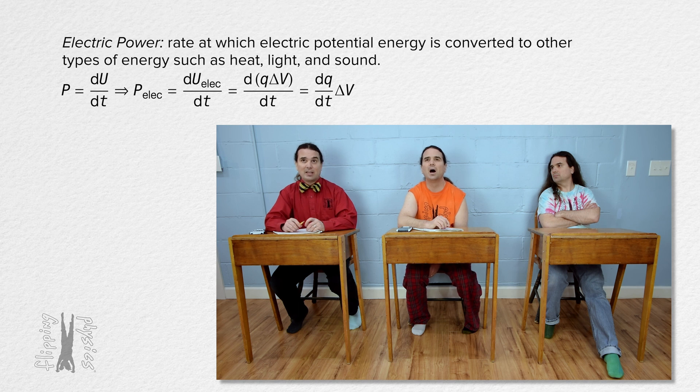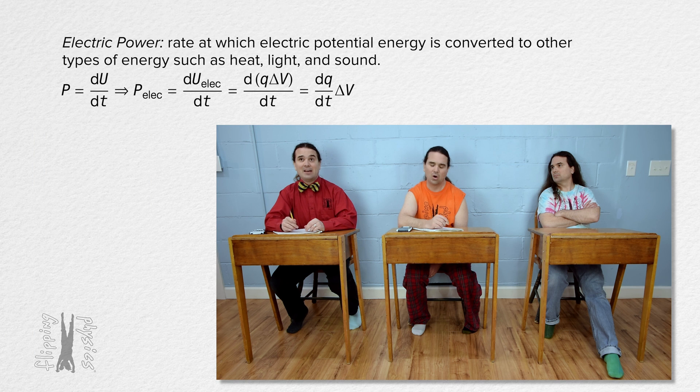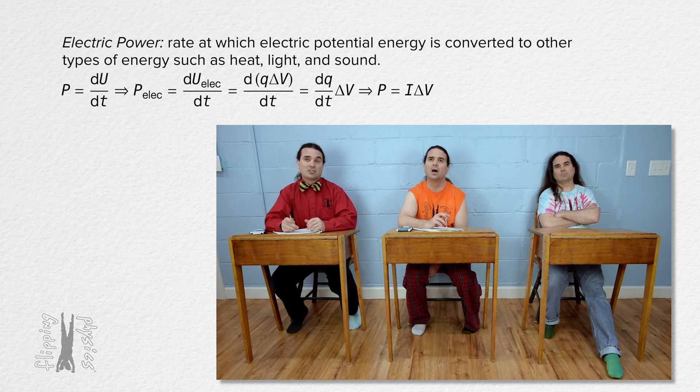That means the rate at which a circuit element converts electric potential energy to heat, light, and sound equals the current through the electric element multiplied by the electric potential difference across the circuit element. Yes Billy, that is correct.